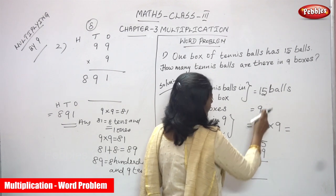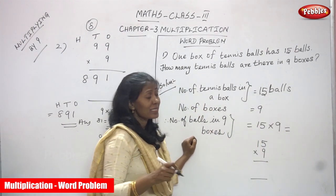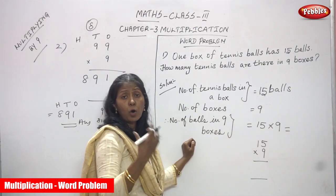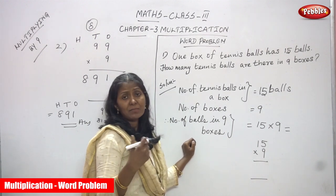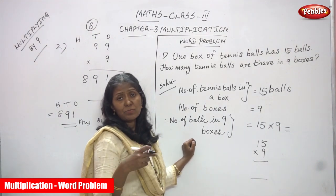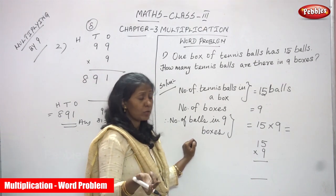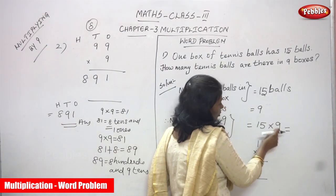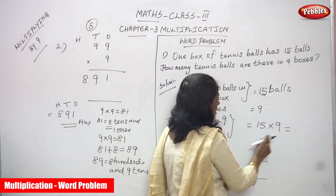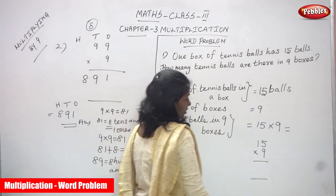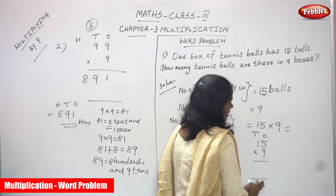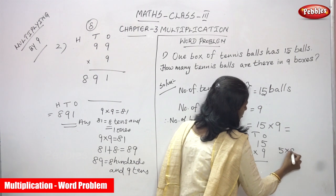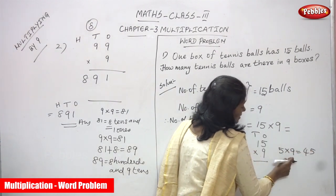We are going to find out the number of balls in 9 boxes by multiplying. This is the 1s and this is the 10s. First I concentrate on the 1s: 5 into 9, that is 5 9s are 45. 45 means 4 tens and 5 ones. So I write 5 in the 1s place and the remaining 4 tens go as a carryover.